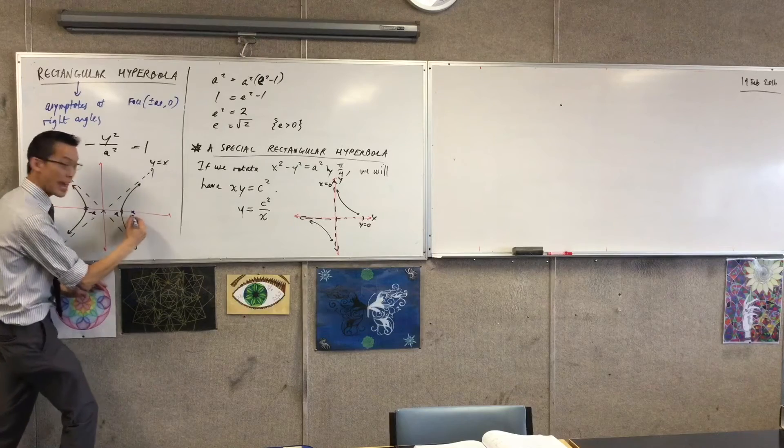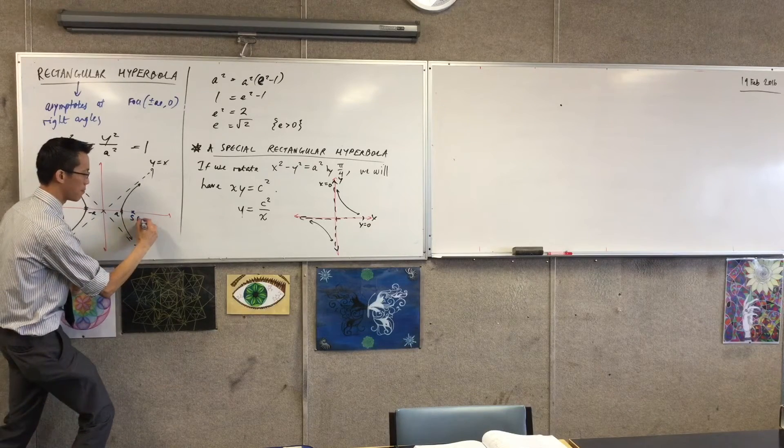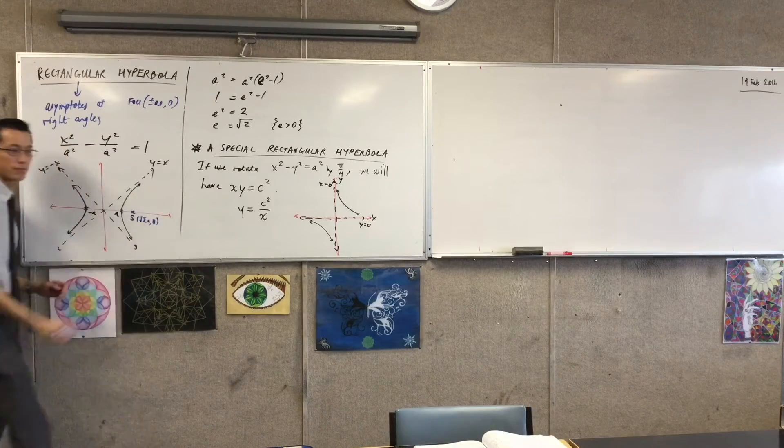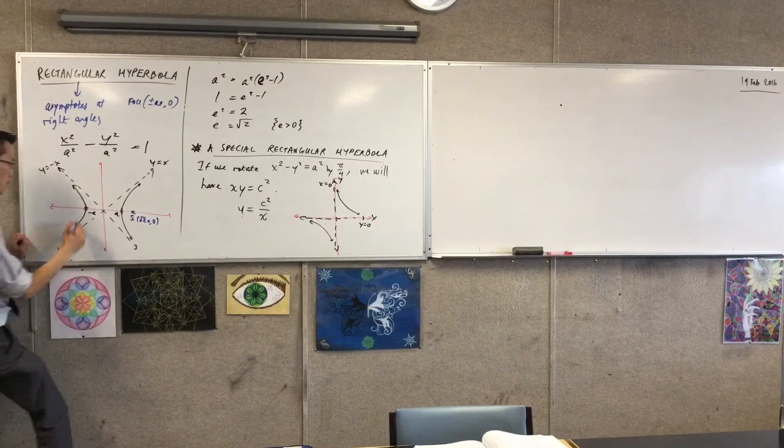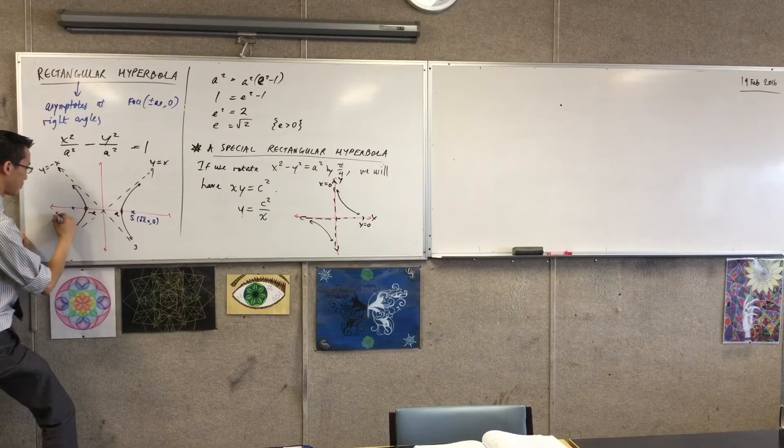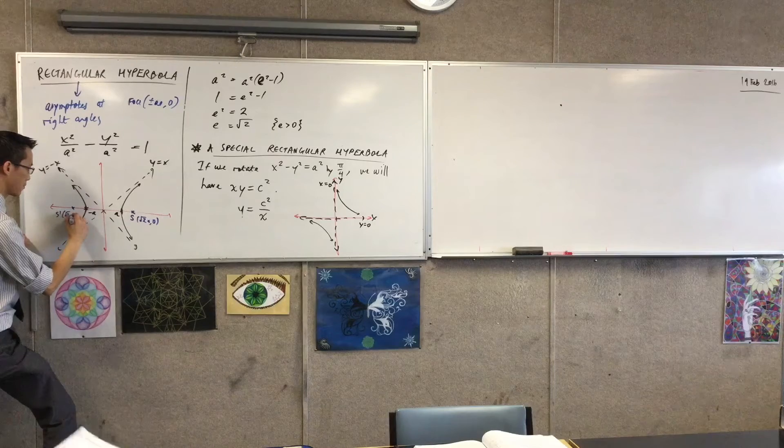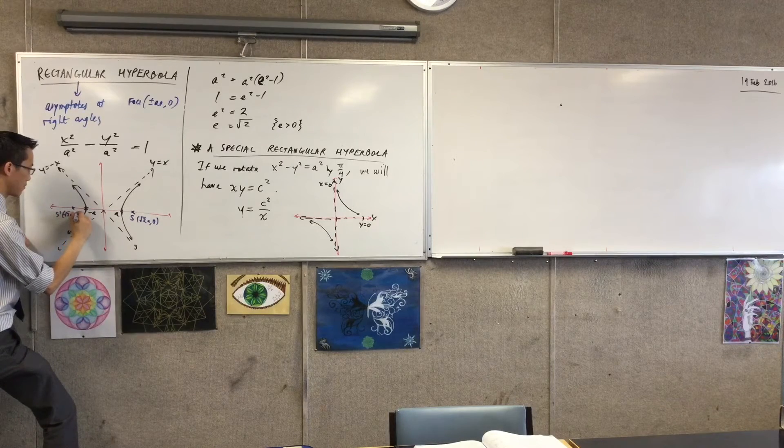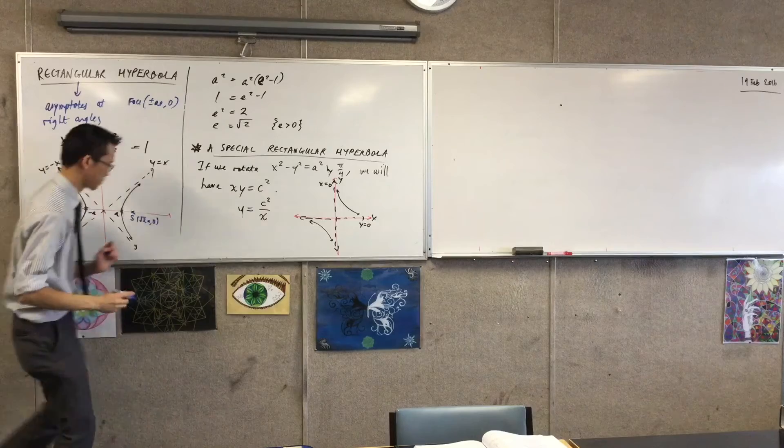So I'm going to call that one S, which would be root two A comma zero. And then of course you've got its mirror image over here. That's a bit messy.